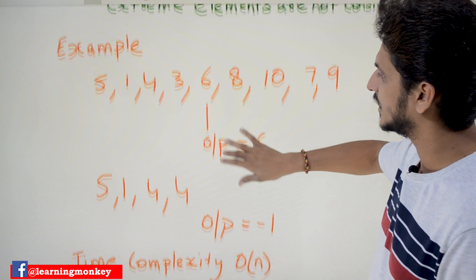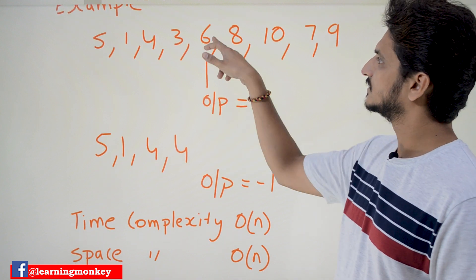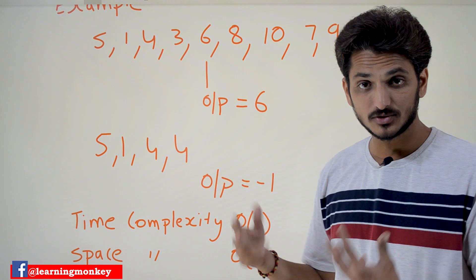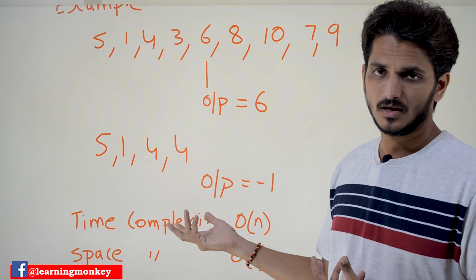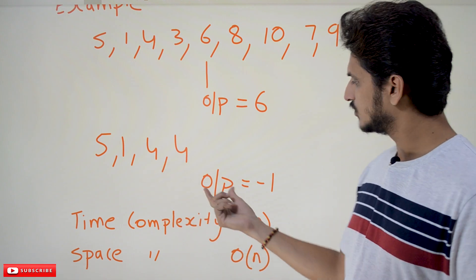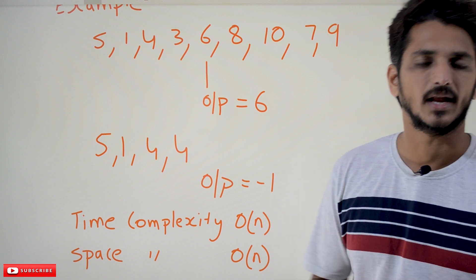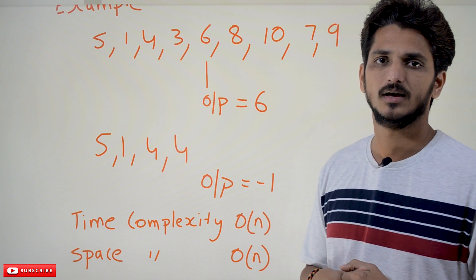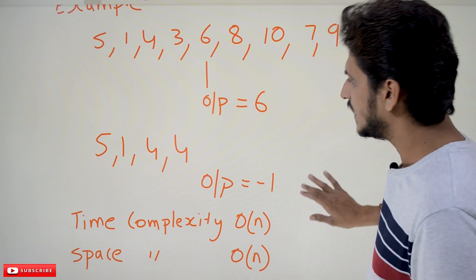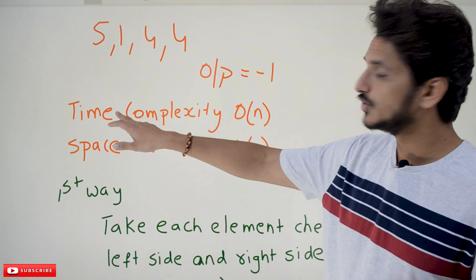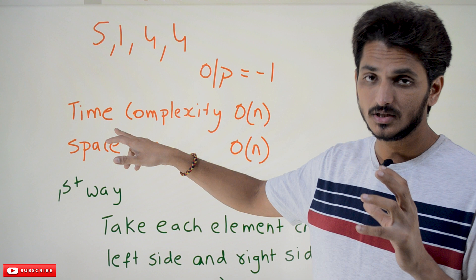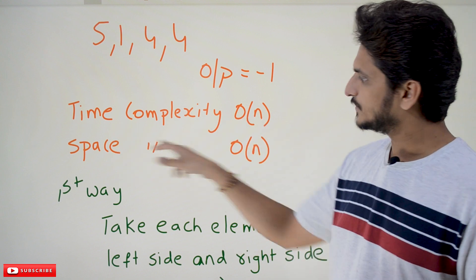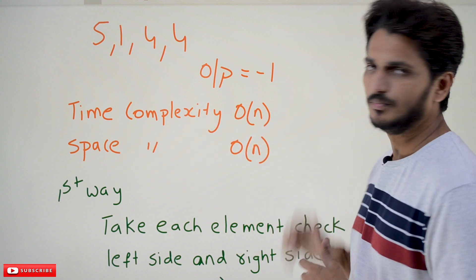For the array 5, 1, 4, 4 — there is no such element possible. In this case we have to output minus 1. In the coding, you have to maintain a time complexity of O(n) and a space complexity of O(n).